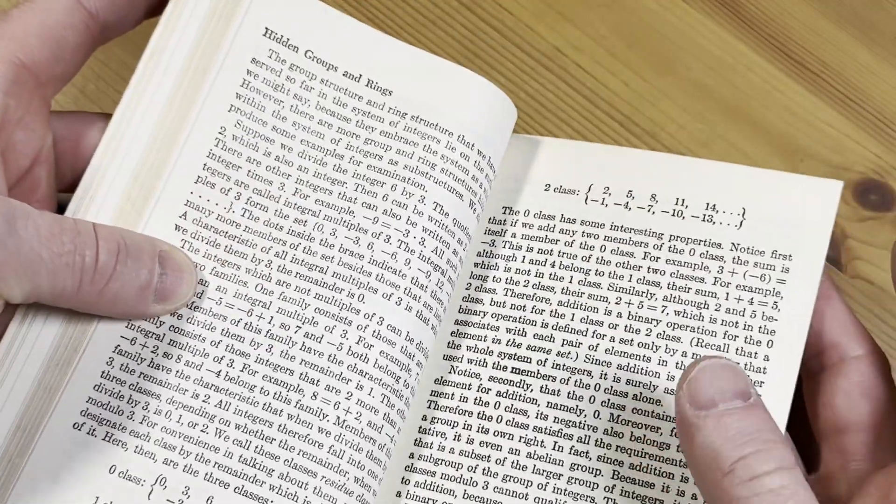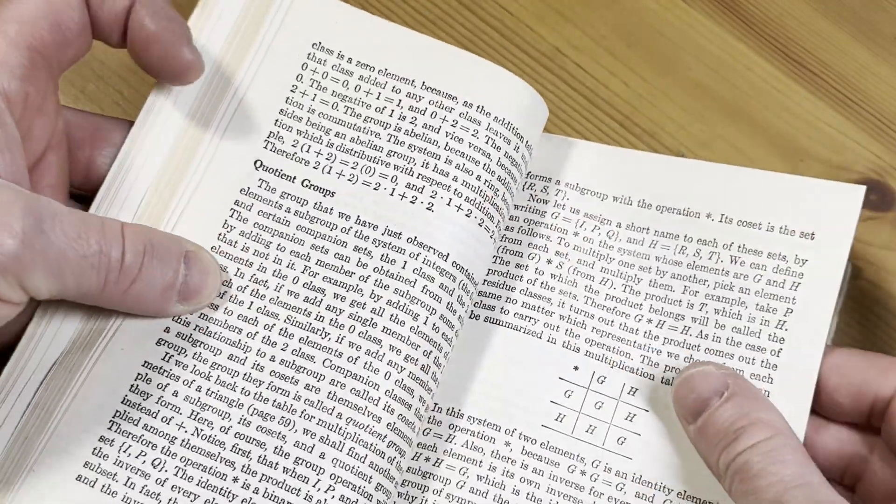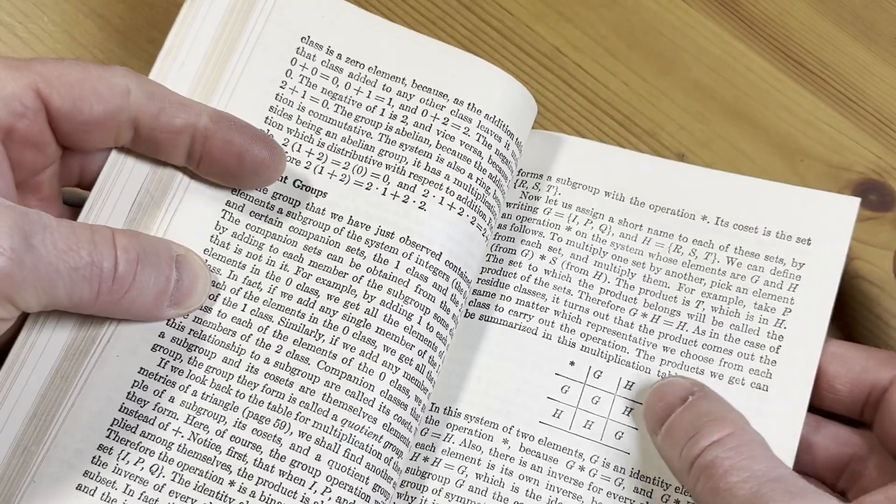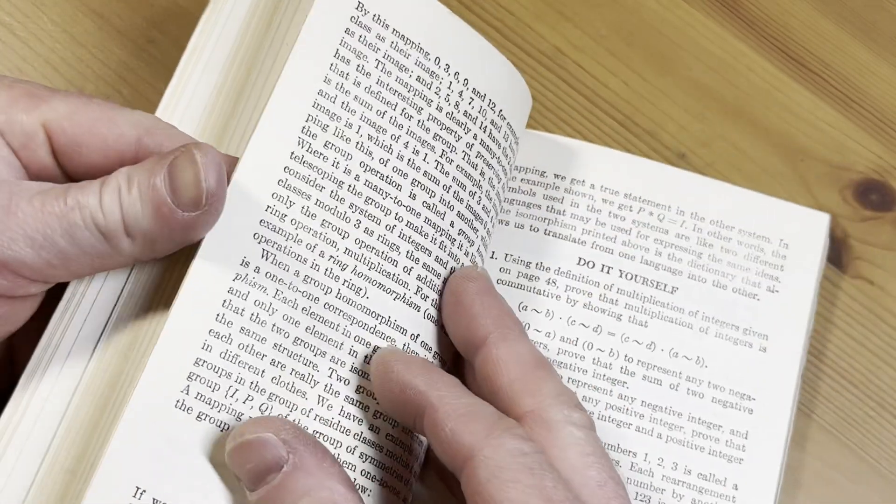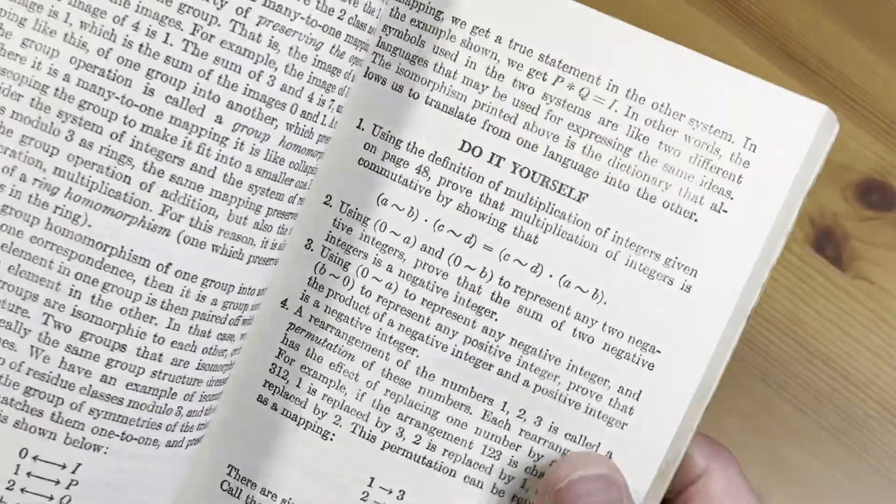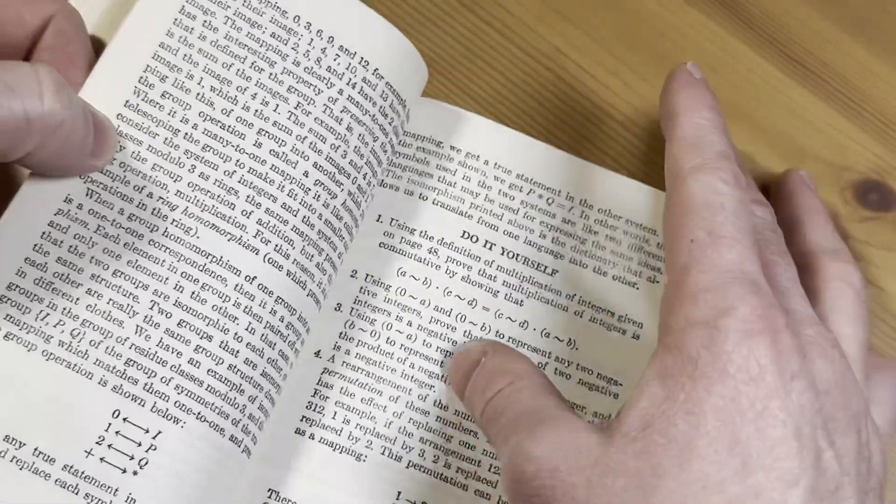Hidden groups and rings. Cool, right? Quotient groups. There's the multiplication table for a quotient group. And then do-it-yourself, right? It's got some problems.